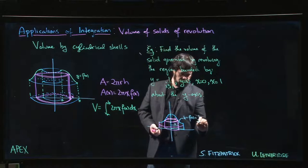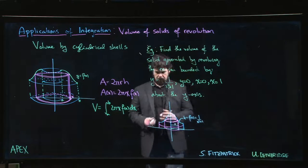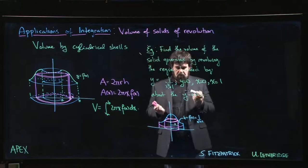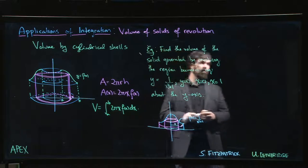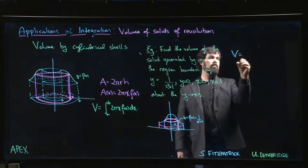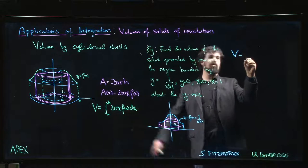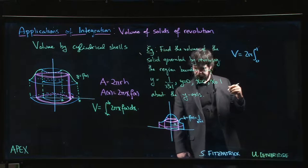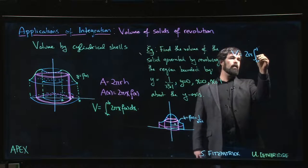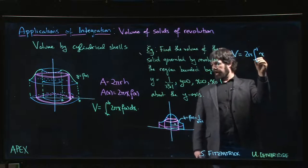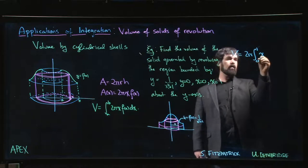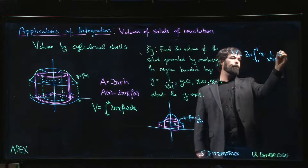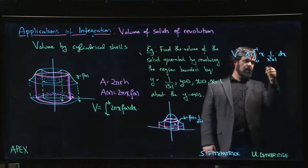And our bounds are given to us here. Okay, so this is a straightforward setup. Volume is according to this: 2 pi integral, x going from 0 to 1, of x f of x, so x times 1 over x squared plus 1 times dx.